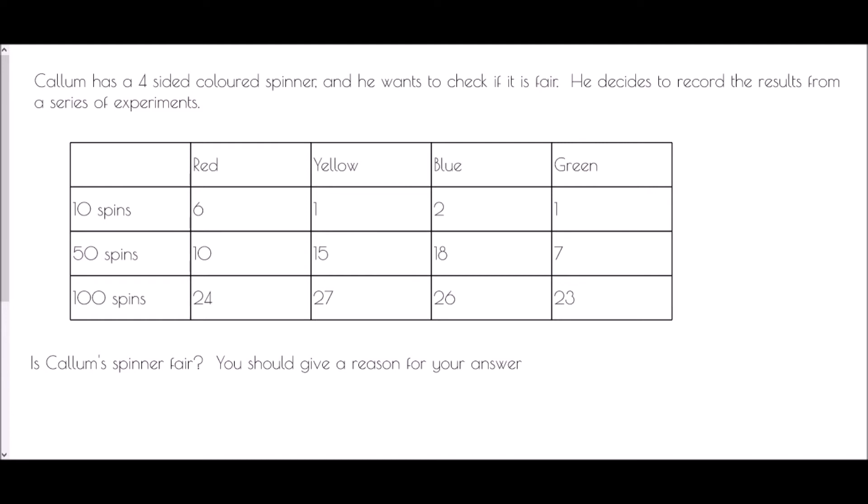Then he continued and he did it for 50 spins. And by the time he'd completed 50 spins, he had 10 reds, 15 yellows, 18 blues, and 7 greens. And then he continued even further. He went on to do 100 spins. And after 100 spins he had 24 reds, 27 yellows, 26 blues, and 23 greens.